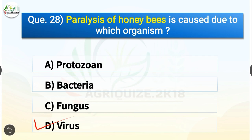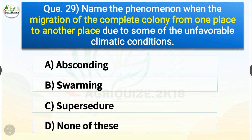Question number twenty-nine: Name the phenomenon when the migration of the complete colony from one place to another place due to unfavorable climatic conditions occurs. The correct answer is absconding. Absconding is the phenomenon when the migration of the complete colony from one place to another due to unfavorable climatic conditions occurs.